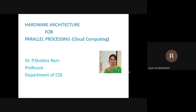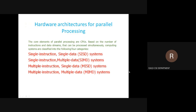Good morning to one and all. Today we will talk about the hardware architecture for parallel processing in cloud computing. We have four types of the computer systems that architecture provides for parallel processing. Parallel processing means different types of tasks will be processed simultaneously, as opposed to sequential processing.